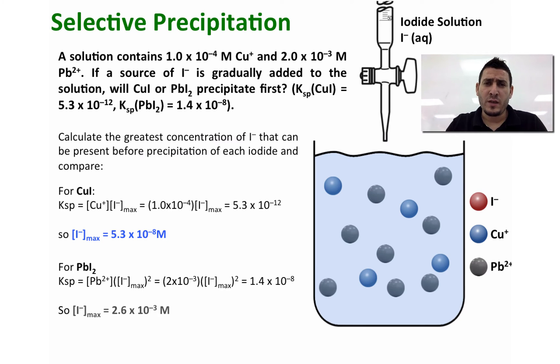In a similar way, we can calculate the maximum concentration of I minus that can be present in the solution before any of the lead iodide precipitates, and we find that it's equal to 2.6 times 10 to the power minus 3 molar.